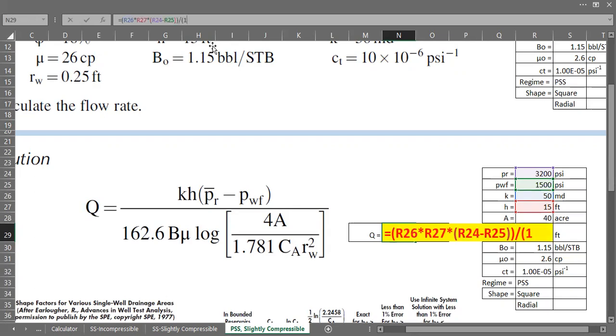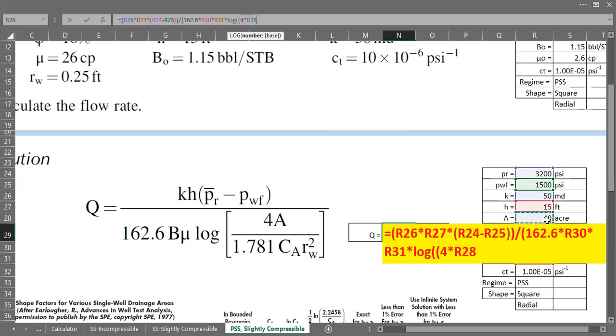Open parenthesis, it is 162.6 multiplied by oil formation volume factor multiplied by viscosity 2.6 and then multiplied by logarithmic log.